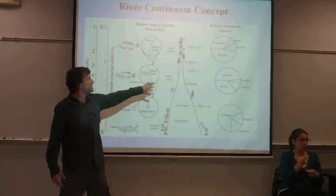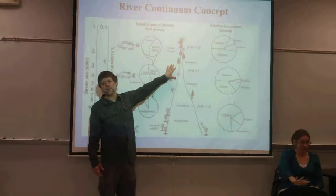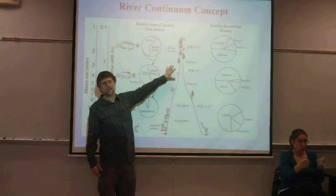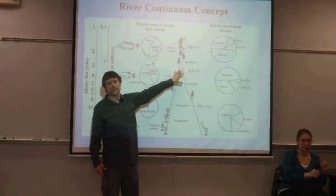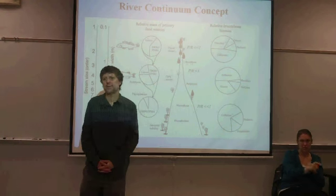In grasslands like Kansas, streams would be more dependent on flooding. These would be open-canopy systems, and the closed canopy might actually happen further down. Think about some other biomes too.